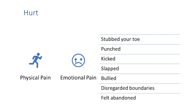The first root is hurt. Hurt can come from two different kinds of pain: physical pain or emotional pain. Physical pain is probably more self-explanatory — you stub your toe when you're bringing in groceries and you're like, "dang it, that hurts!" Maybe you get punched or kicked or slapped. Those are more overt ways of having hurt.